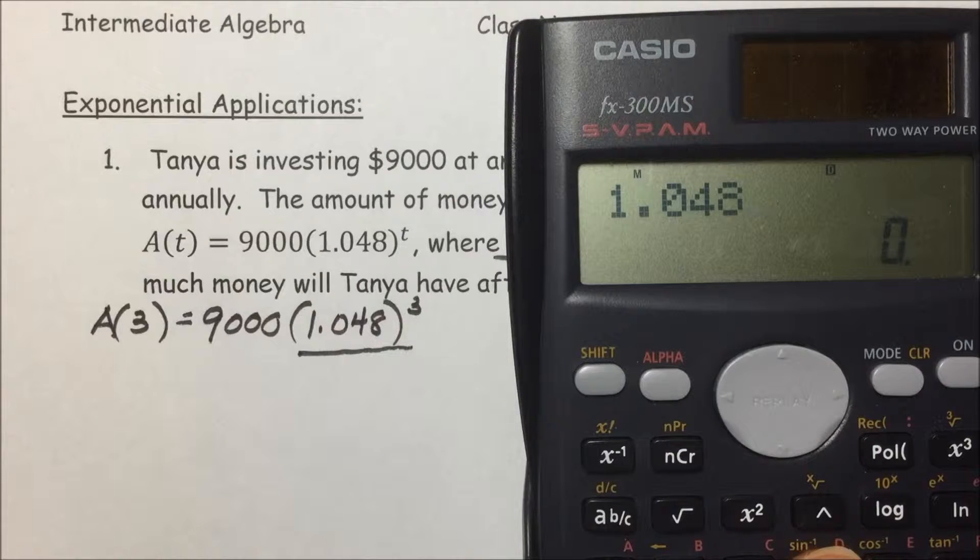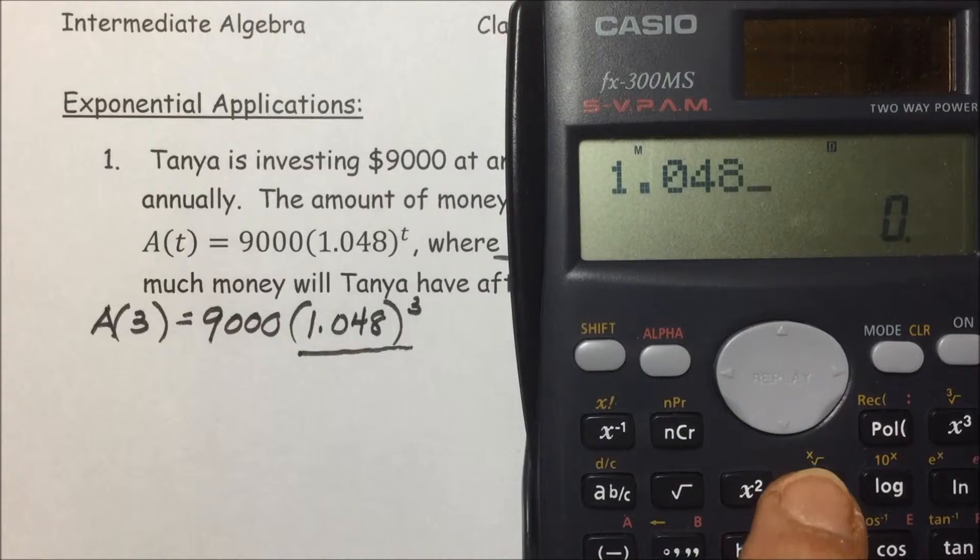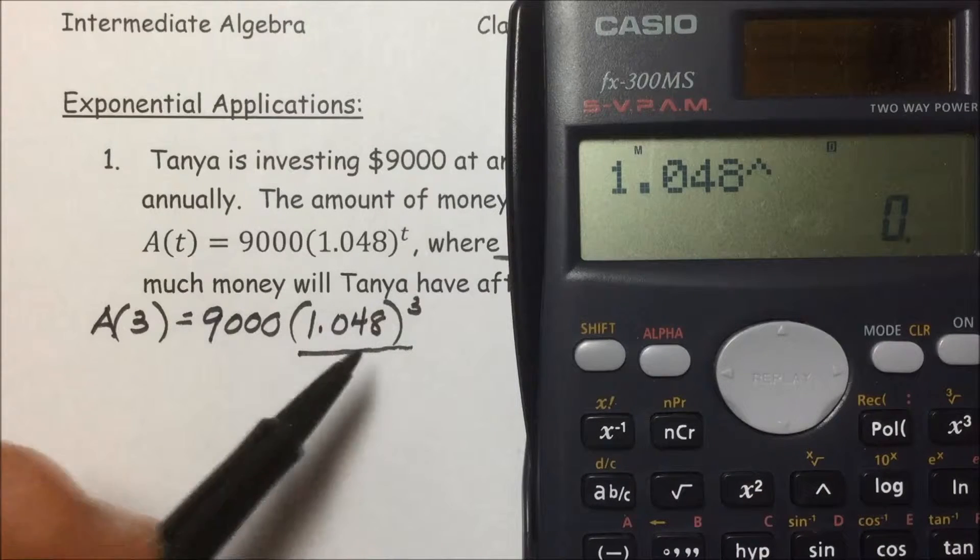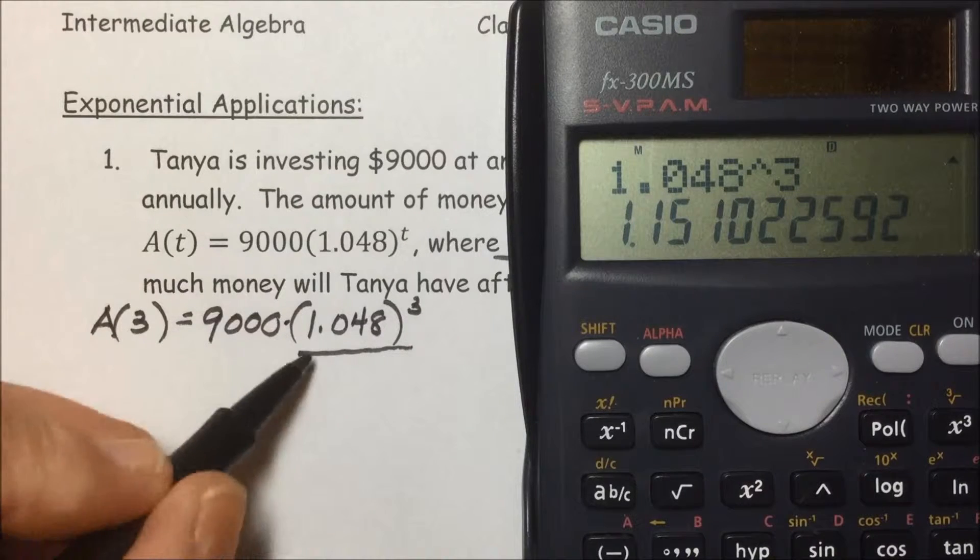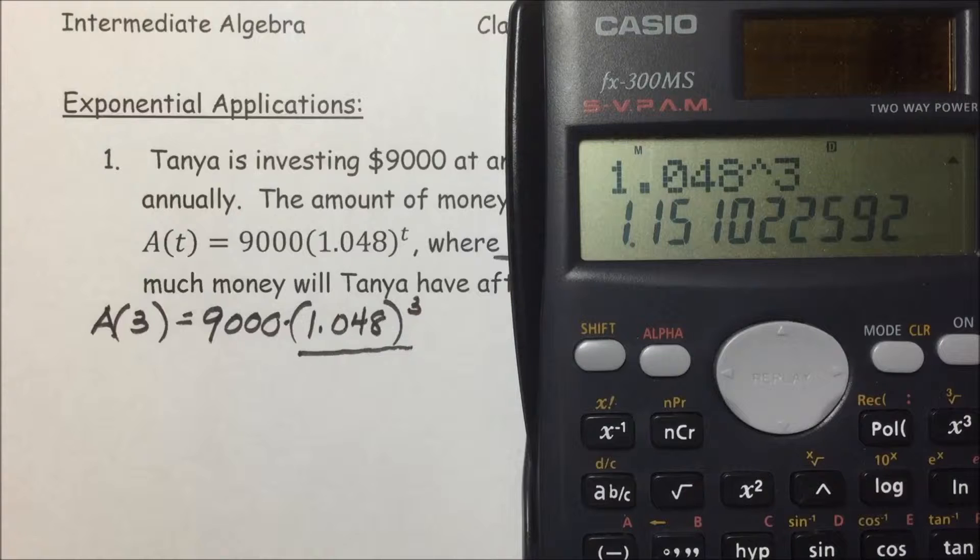For a power key, I'm going to use the caret here, this upside down V, and then put the exponent of 3. Hit the equals to calculate that value. And then the last operation in this function is to multiply by 9,000, the initial or principal investment.